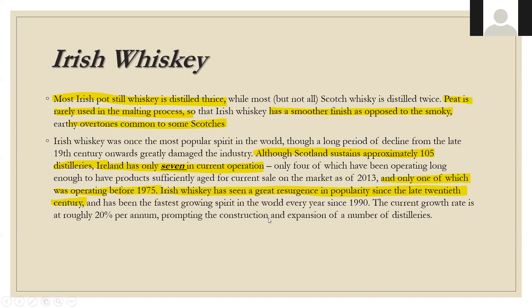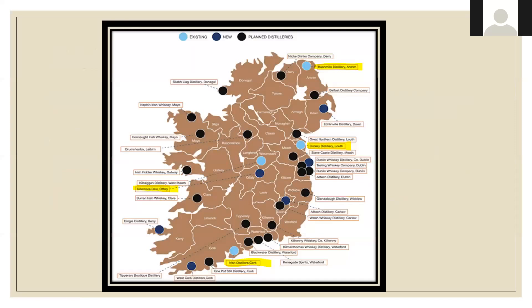Although Scotland sustains about 105 distilleries, Ireland has only around seven currently in operation — only one of which was operating before 1975. Irish whiskey has seen a great resurgence in popularity since the late 20th century and has been one of the fastest-growing spirit categories every year since 1990. You're starting to see a big expansion of distilleries. Key distilleries include Bushmills in northeastern Ireland, Cooley in Louth, Tullamore Dew in Offaly, and the most important area — Cork — where Irish Distillers produces Midleton, Jameson, Powers, and others.